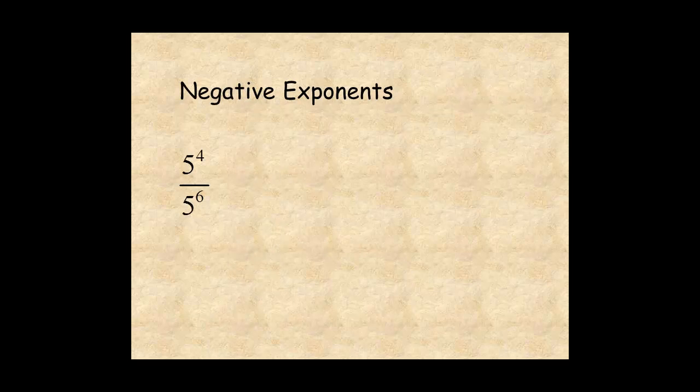If you apply the division rule to this expression, you get 5 to the power of 4 minus 6, which is 5 to the power of negative 2. In order to understand what this negative exponent means, write the expression in a different way.